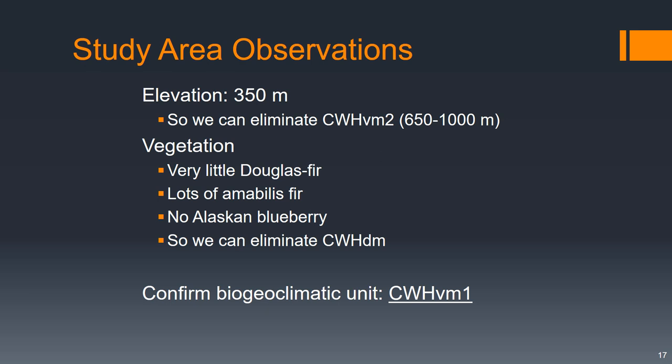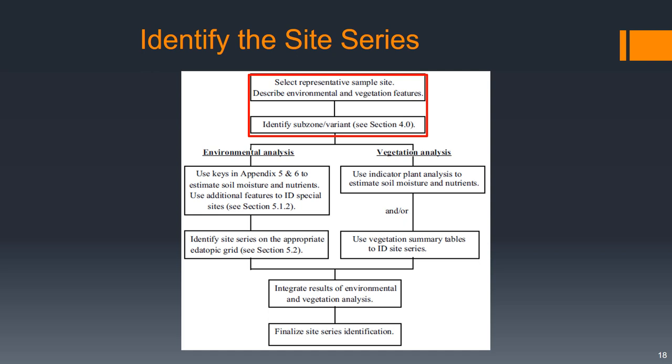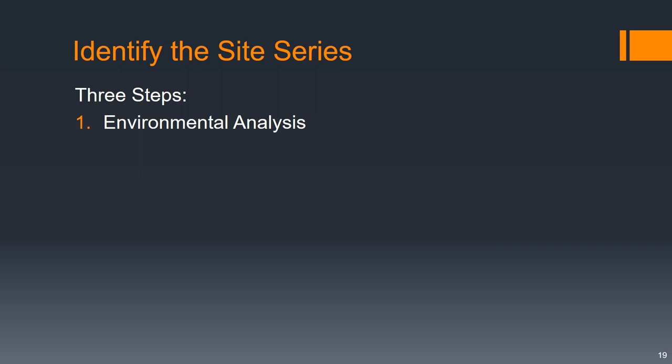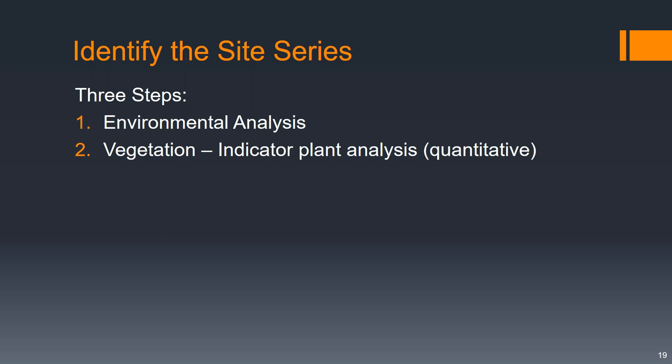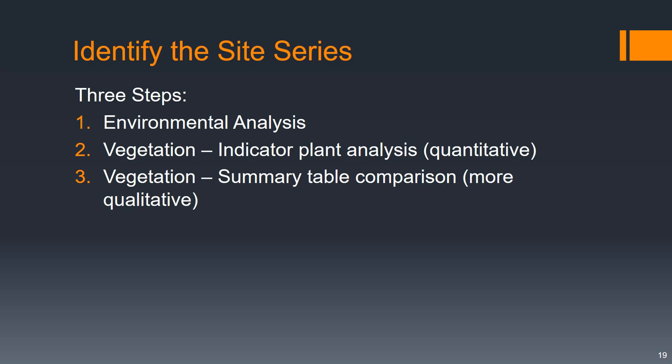Now that we've identified our subzone and variant, there are a couple of steps to figure out what our site series is. First we'll do an environmental analysis looking at site characteristics such as soil and slope position. Then we'll do a vegetation analysis looking at indicator plants — a quantitative approach — and then another vegetation approach looking at summary tables, which is a more qualitative approach. Let's start with the environmental analysis.